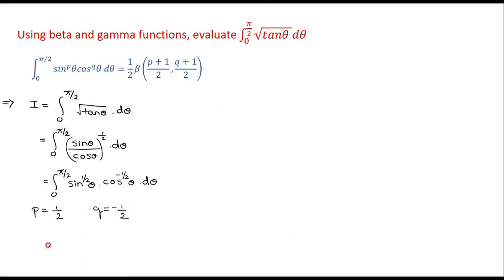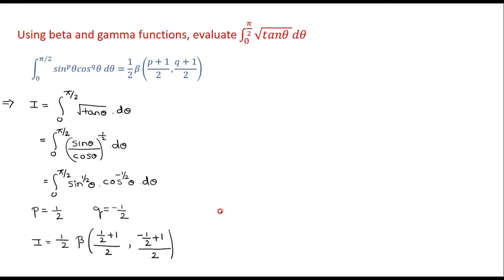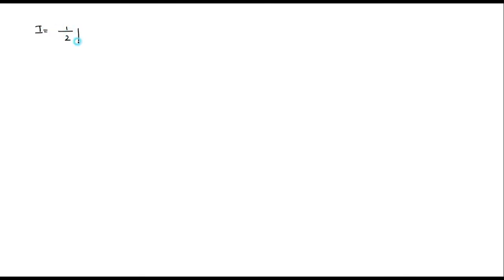Using the relation, the given integral can be written as 1/2 beta of (1/2 + 1)/2, (minus 1/2 + 1)/2. On simplifying: 1/2 + 1 is 3/2, divided by 2 gives 3/4, and (minus 1/2 + 1)/2 gives 1/4. So we have the given integral I equal to 1/2 beta of (3/4, 1/4).